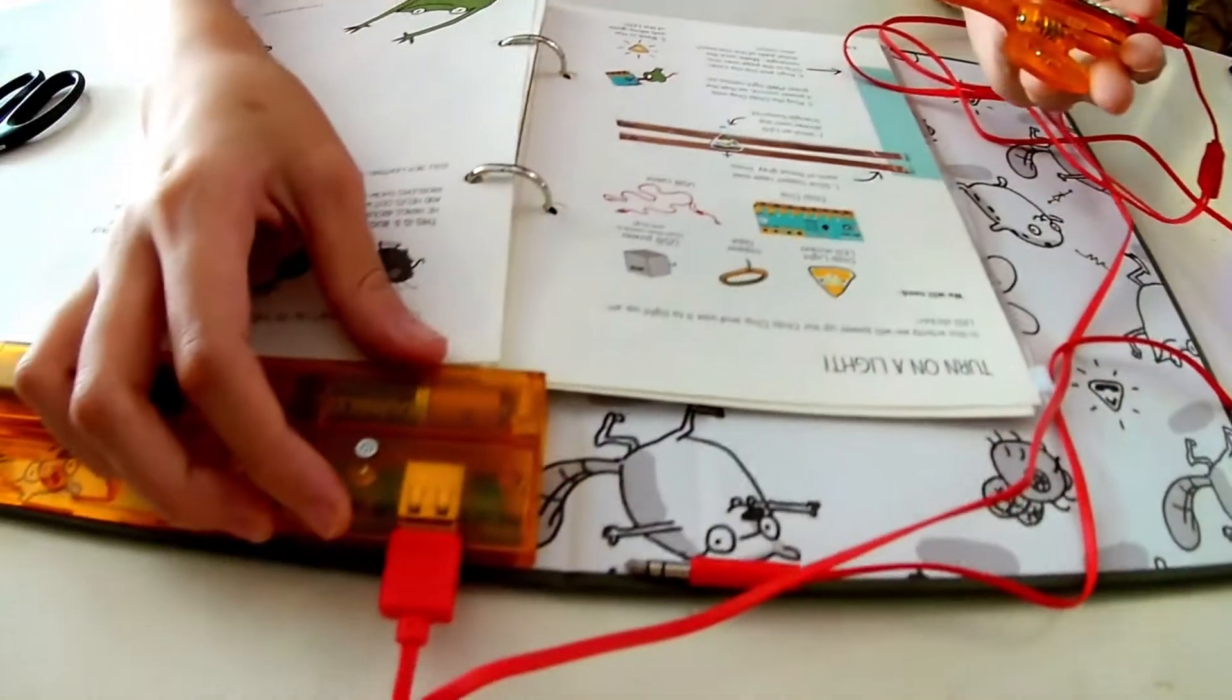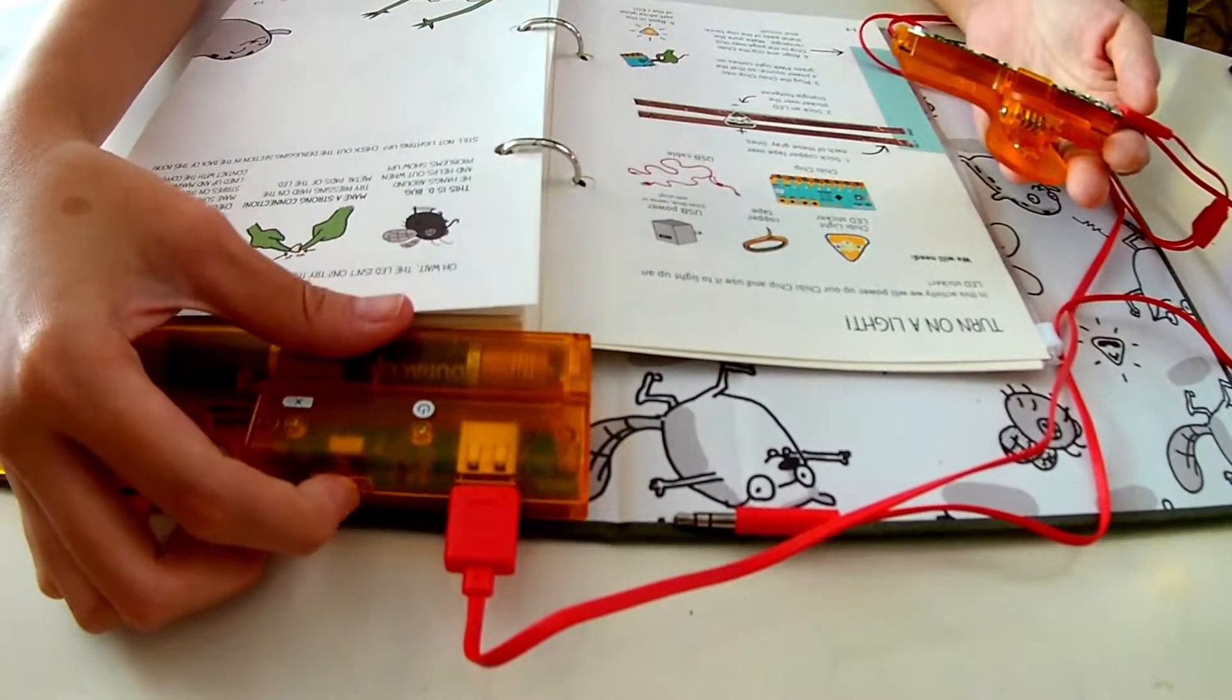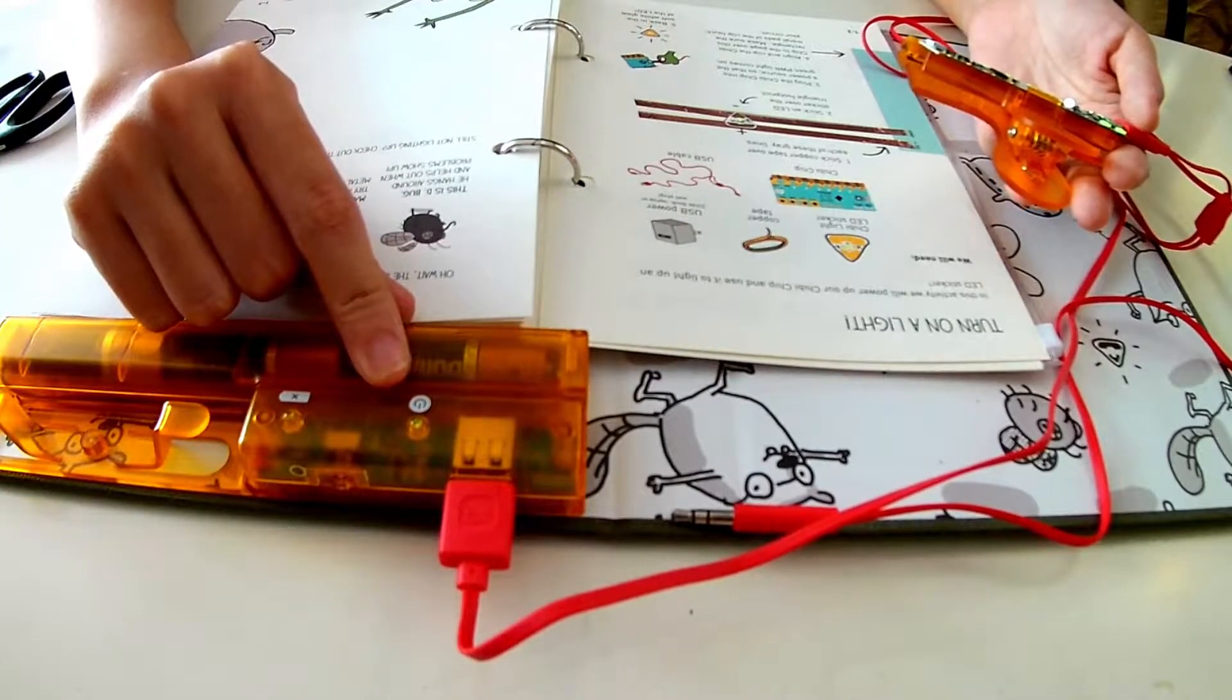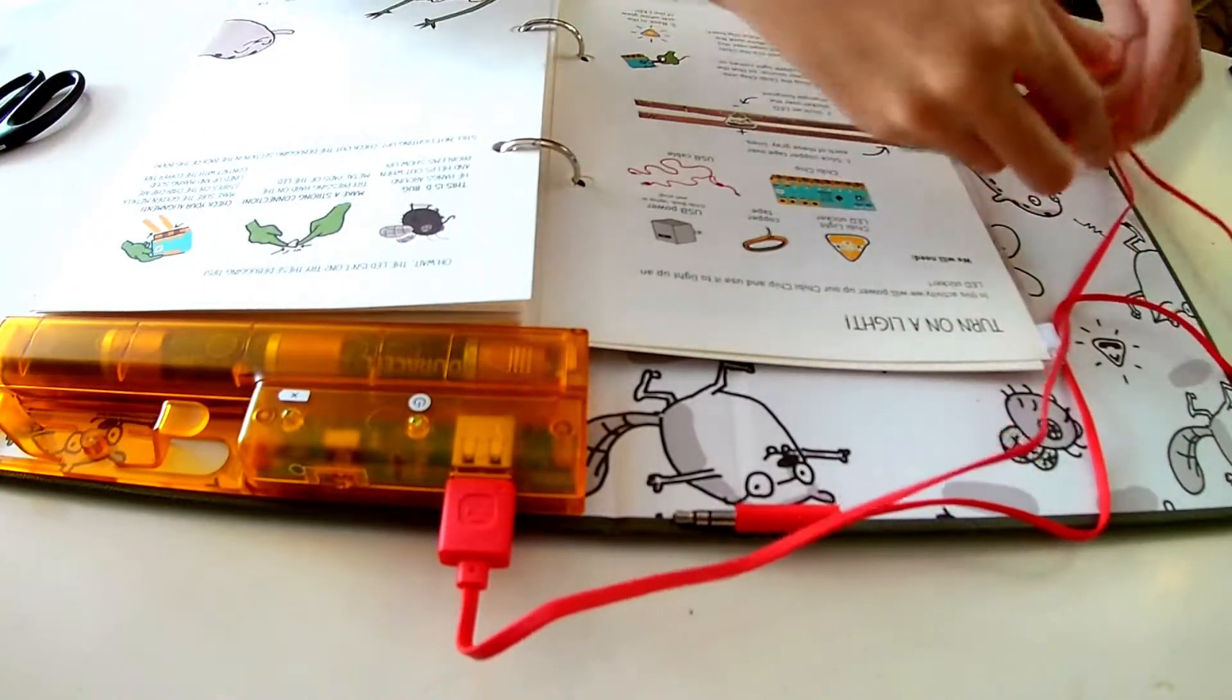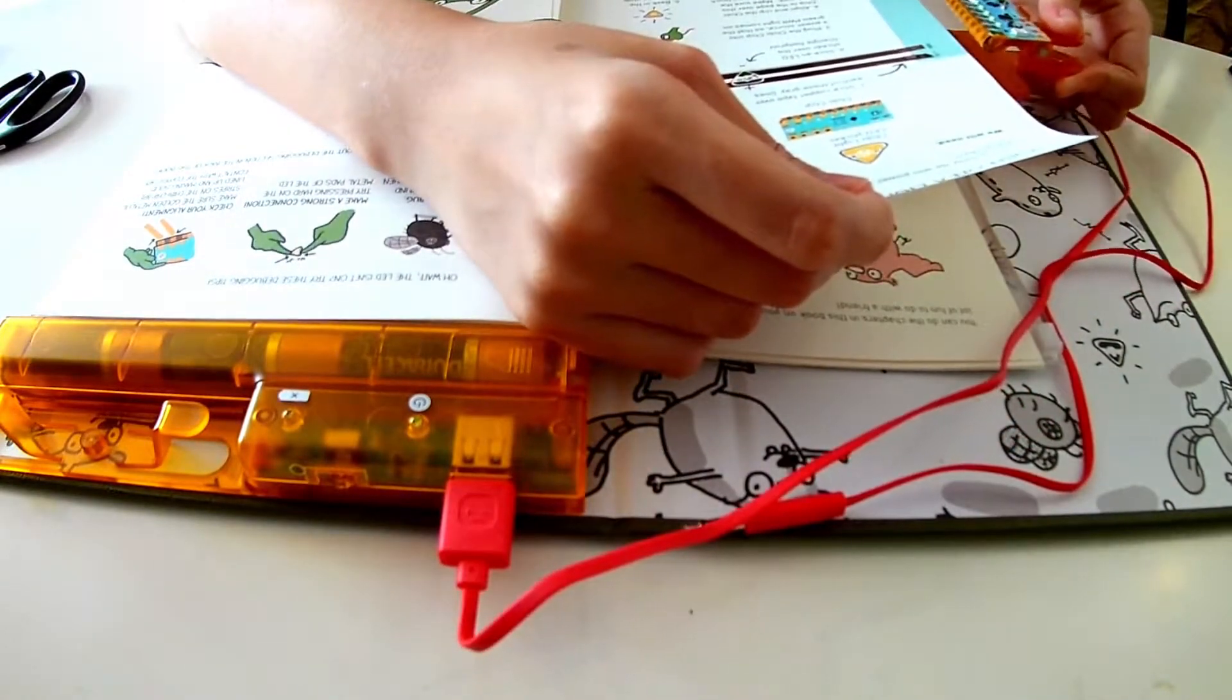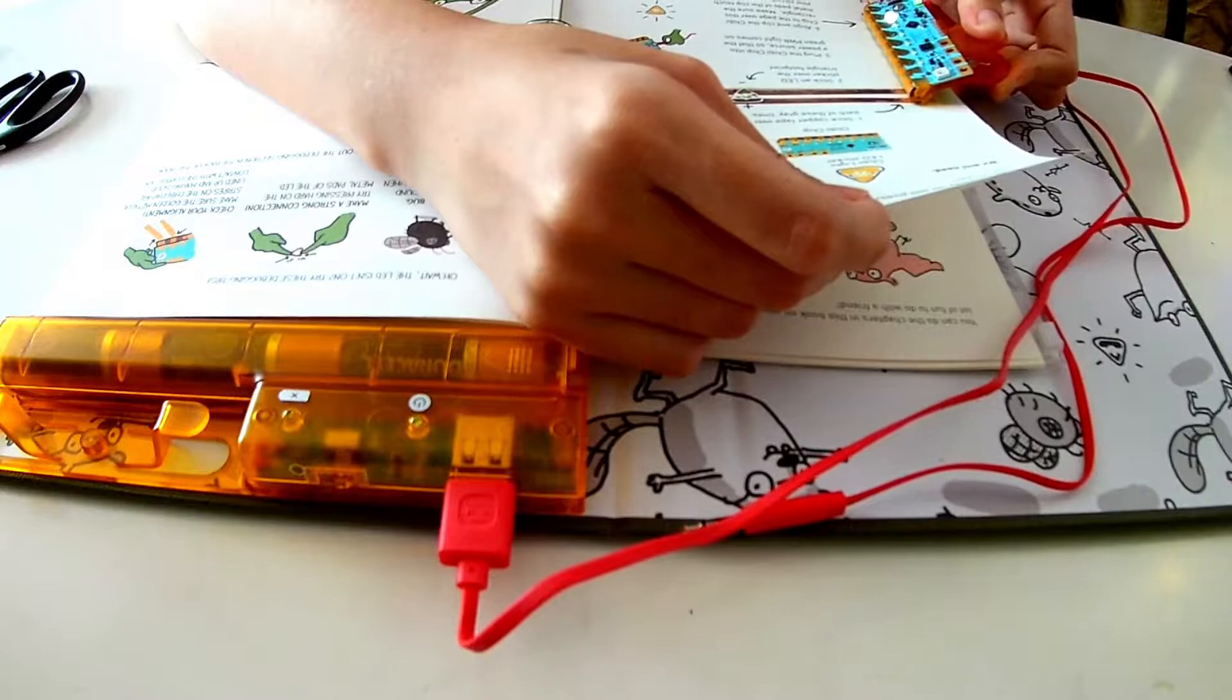Now turn on the power for the chibi book by flipping the switch. A green power light will turn on. Clip the chibi chip onto the page as shown. You'll see the white LED glow.